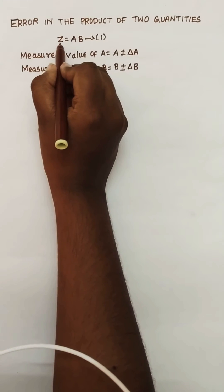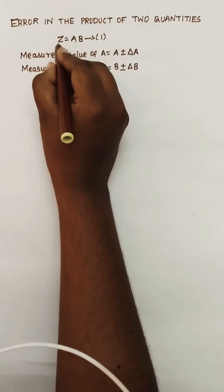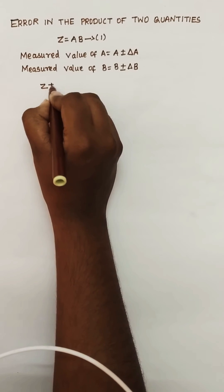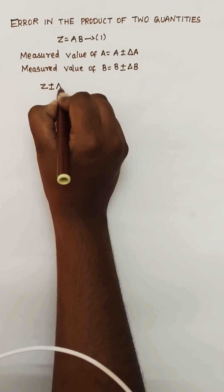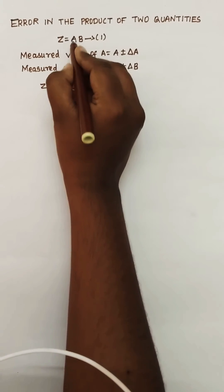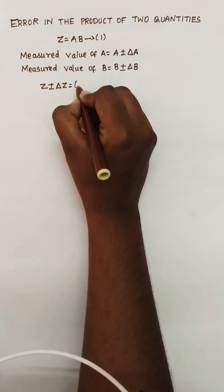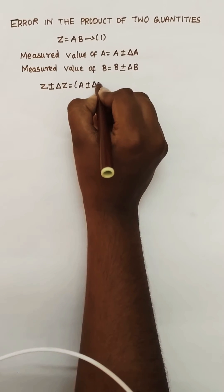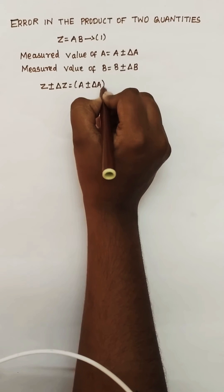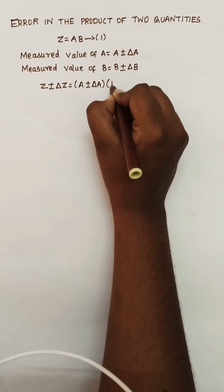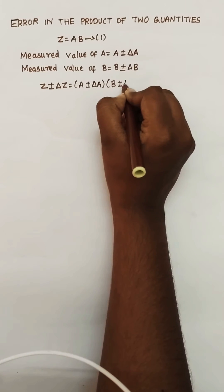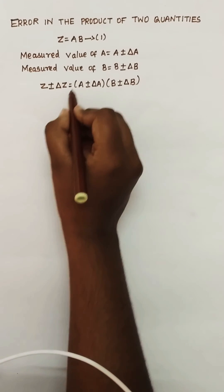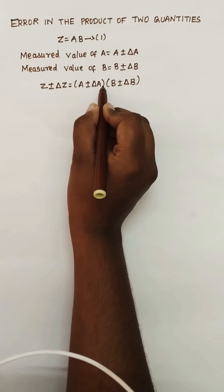Can we substitute in this? So what is the measured value of z? Same way, z plus or minus delta z is equal to — substitute measured value of a: a plus or minus delta a — multiplied by the measured value of b: b plus or minus delta b.